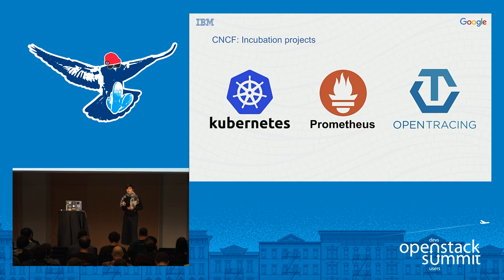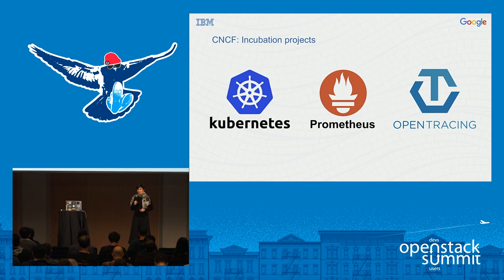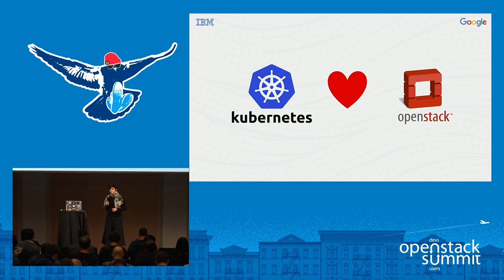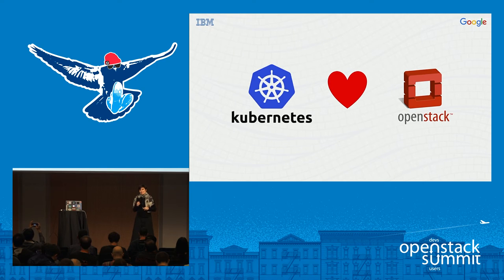The CNCF took a lot of lessons from OpenStack. There were many things OpenStack did very well that we tried to emulate. The projects are governed independently with oversight from a technical oversight committee. Since we're talking about OpenStack, and because Kubernetes is my current love of open source, I want to talk about how Kubernetes and OpenStack are working together.